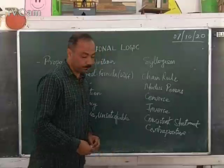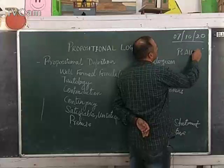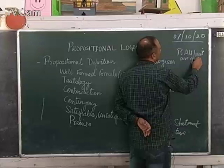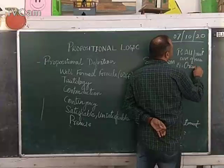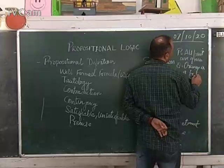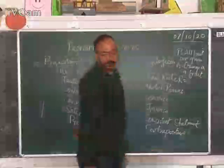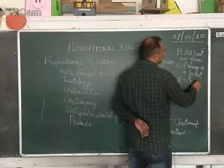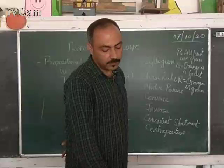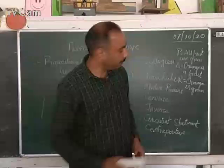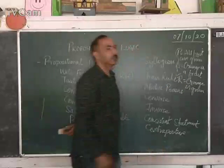Example of syllogism: let statement P be 'all fruits are green,' statement Q be 'orange is a fruit,' and statement R be 'orange is green.' Based on these three statements, if we deduce statement R — 'orange is green' — from the first two statements P and Q, this is called syllogism.